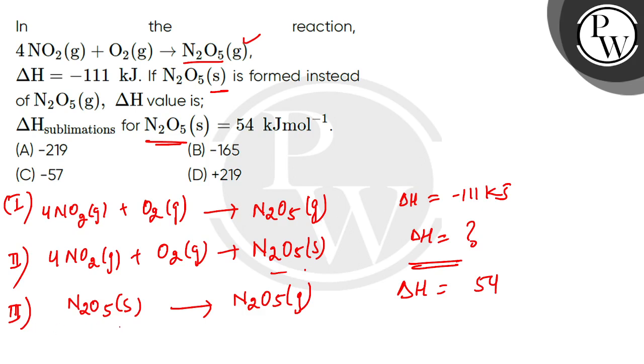Third reaction has N2O5 solid but it is in left hand side. That means that I will multiply the third reaction by minus one. So minus one. Where will it go? Right hand side.